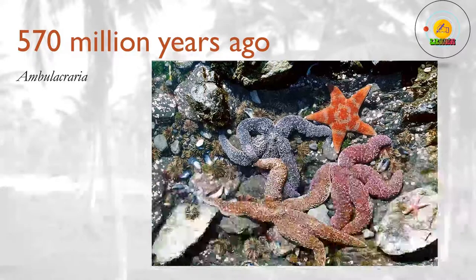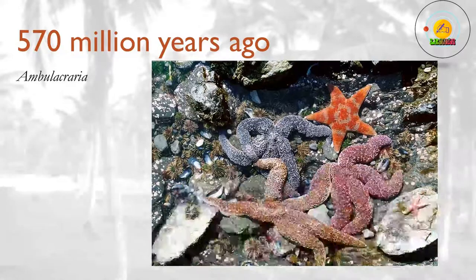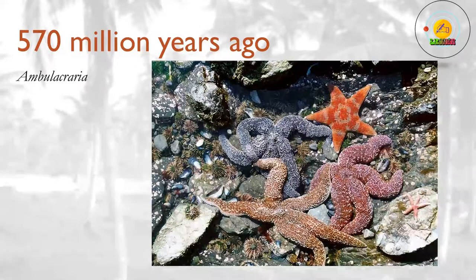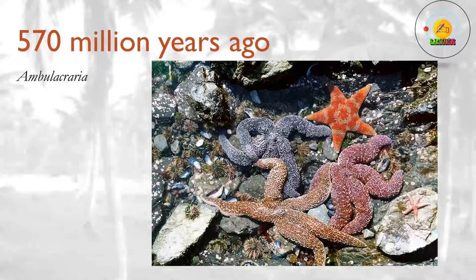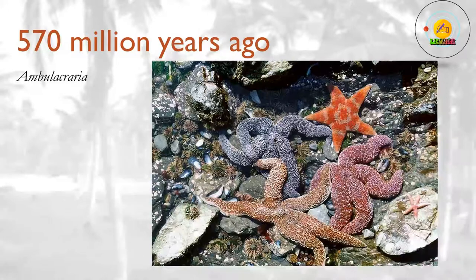570 million years ago? A small group breaks away from the main group of deuterostomes, known as the Ambulacraria. This group eventually becomes the echinoderms — starfish, brittle stars and their relatives — and two worm-like families called the Hemichordates and Xenoturbellida. Another echinoderm, the sea lily, is thought to be the missing link between vertebrates — animals with backbones — and invertebrates — animals without backbones — a split that occurred around this time.